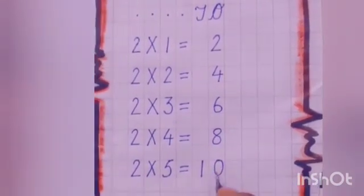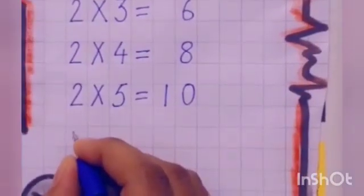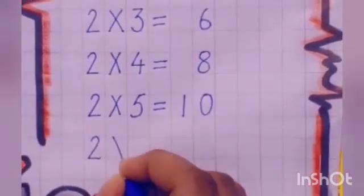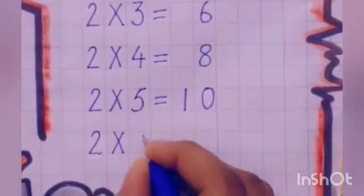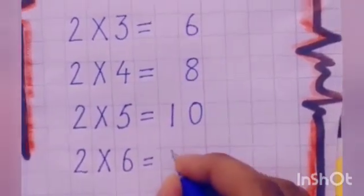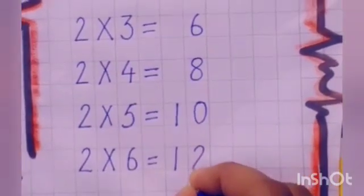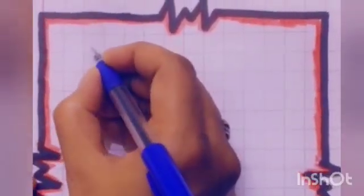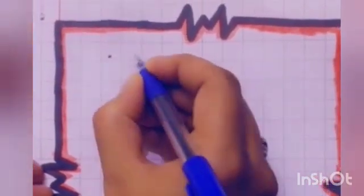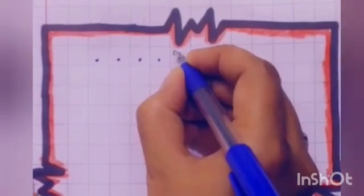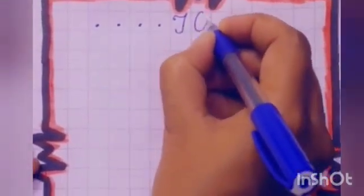Next is 2 6s are 12. Again, 2 digits are there. So we will write 1 under 10s and 2 under 1s. 2 6s are 12. In order to continue our table on the next page, we will again leave 4 boxes and in the next box write T and O. Leave one box.